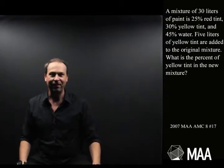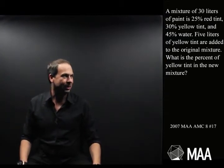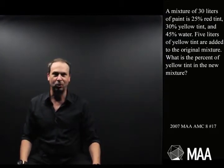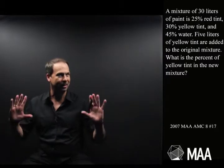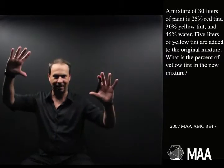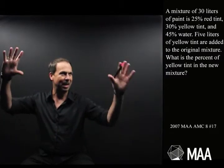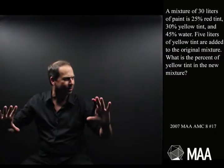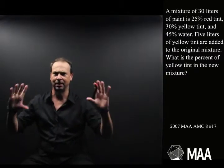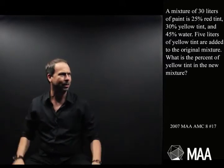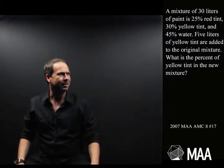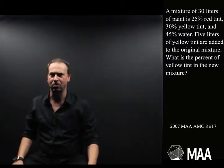5 litres of yellow tint are added to the original mixture. So we have 30 litres of all this stuff, and then we add 5 litres of yellow tint to get something new. What is the percent of yellow tint in the new mixture?